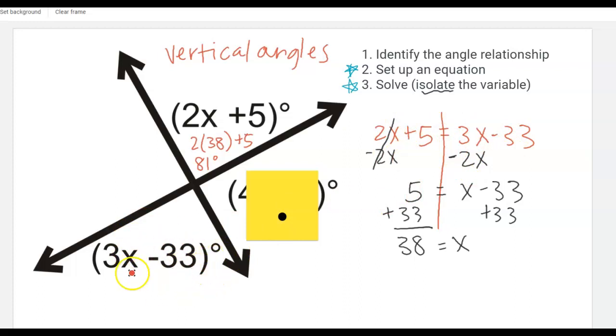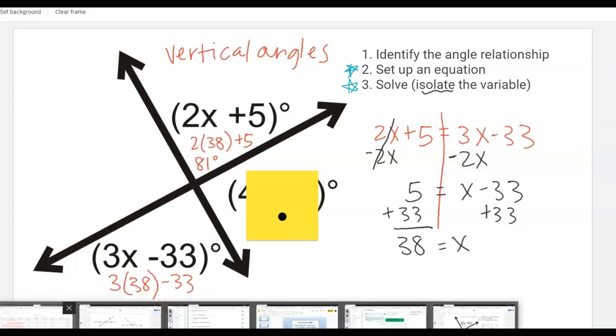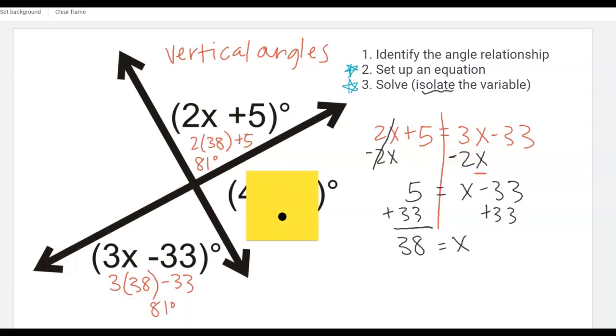So when I plug in my 38 over here which is now 3 times 38 minus 33 I should also get 81. You can just crunch that in your calculator, 3 times 38 is 114 and then subtract 33 and I get 81 again. So that was good that checked out and I got the same angle measure here.